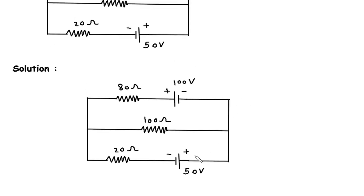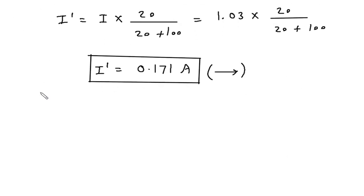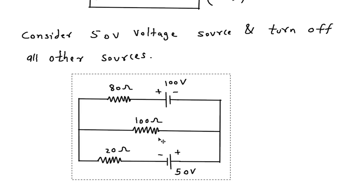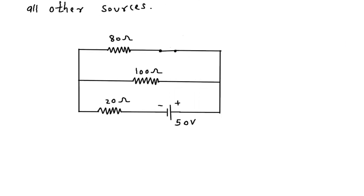Next, we have to consider the 50 volt voltage source and turn off all other sources. If we turn off the 100 volt voltage source, then this will be a short circuit. Here the positive terminal is here and negative terminal is here. The direction of current is from positive to negative, so this will be the direction of current in the 100 ohm resistance.